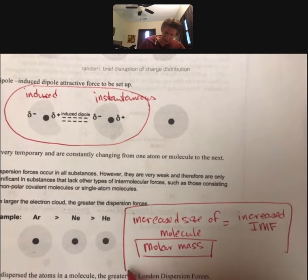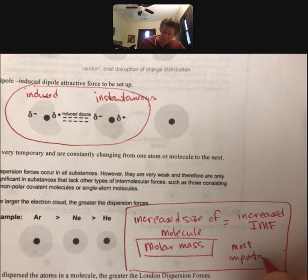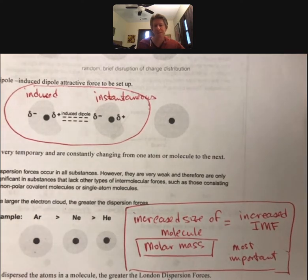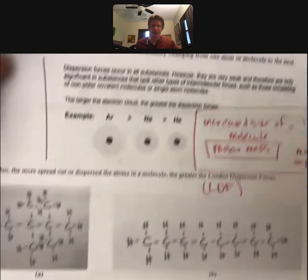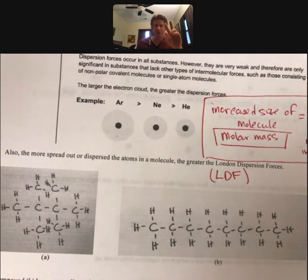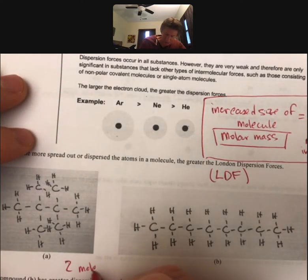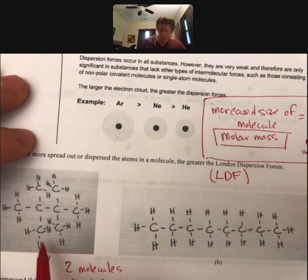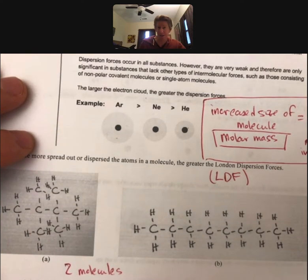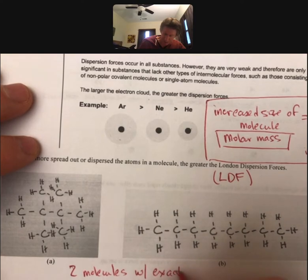And that is the most important trend. This is going to be like ion-ion forces. This is most important for determining LDF. Now, let's say, like in these pictures, you have two molecules with the exact same molar mass. You can count them up here. You can count the carbons and the hydrogens, and they do. Two molecules with exact same molar mass.